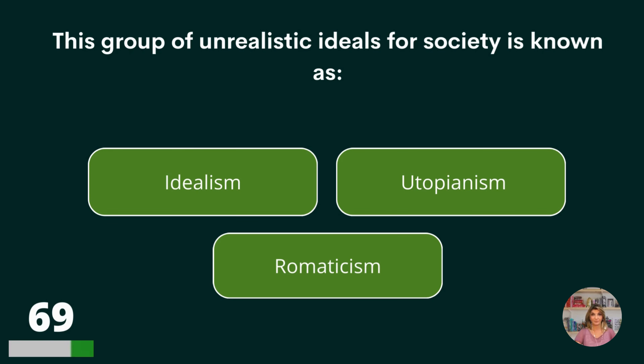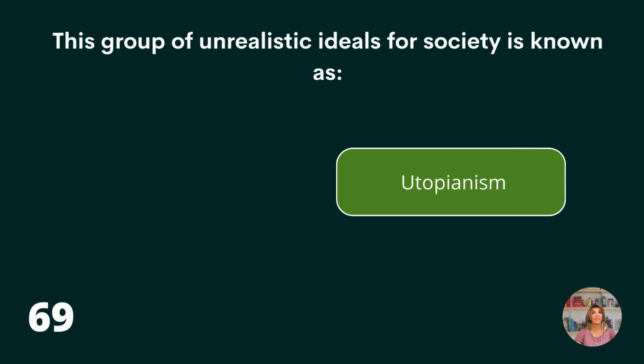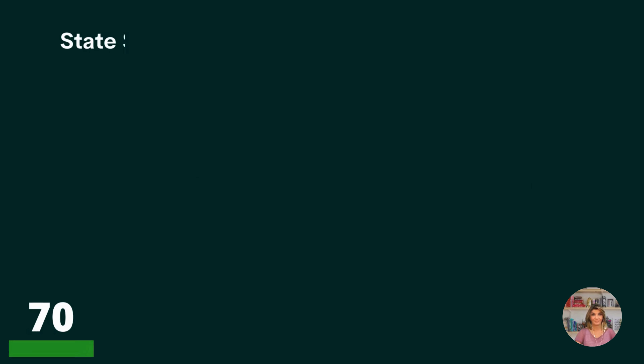This group of unrealistic ideals for society is known as idealism, utopianism, or romanticism?